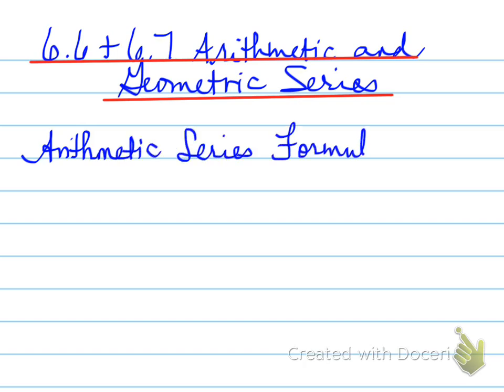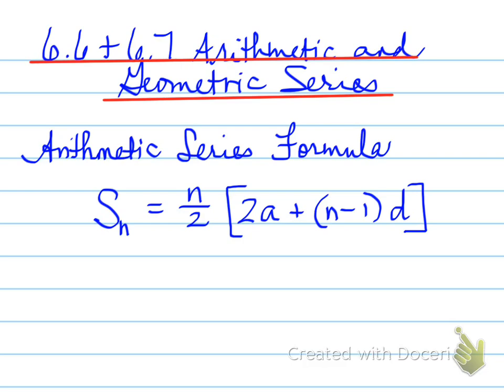An arithmetic series formula is as follows: Sn is equal to n over 2 times 2a plus n minus 1 times d. Another way you can write that formula is Sn is equal to n over 2 times a plus the old Tn formula for arithmetic sequence. So the Tn here is the arithmetic sequence general formula. We add an extra a value and times it by n over 2.